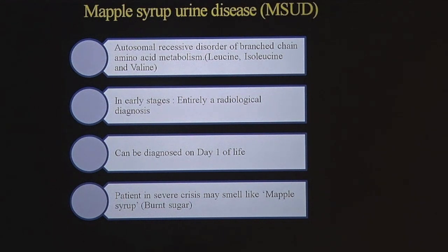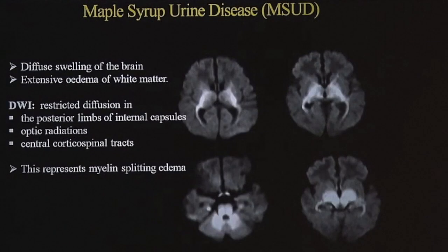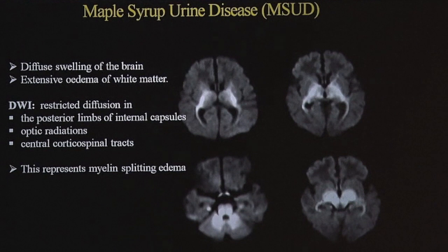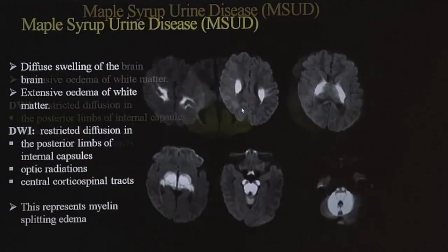A child in crisis would smell like burnt sugar, which is why the disease is called maple syrup urine disease. The classic appearance is restricted diffusion not only in the periventricular white matter but also in the posterior fossa — specifically the middle cerebellar peduncles, peridentate cerebellar white matter, and pons — as well as the optic radiations and internal capsules.